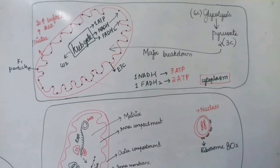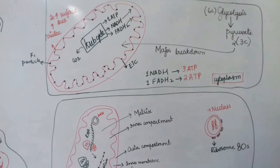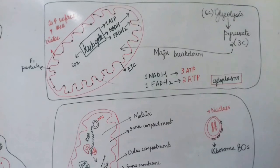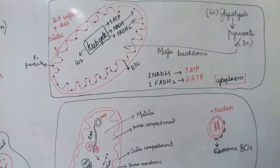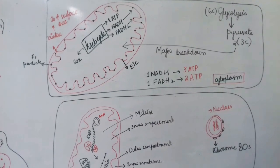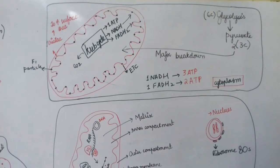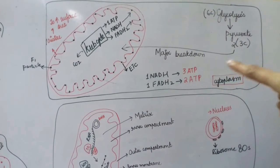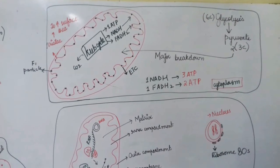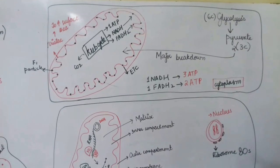Pyruvate goes directly into mitochondria, where the Krebs cycle occurs. From the Krebs cycle, carbon dioxide is released, then one ATP directly, NADH, and then FADH2. One NADH produces 3 ATP, one FADH2 produces 2 ATP. NADH and FADH2 then go to the electron transport chain.